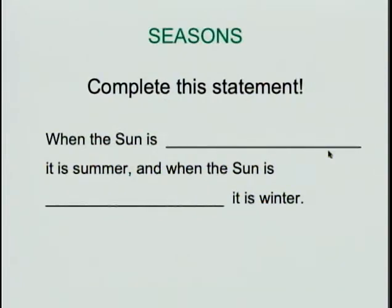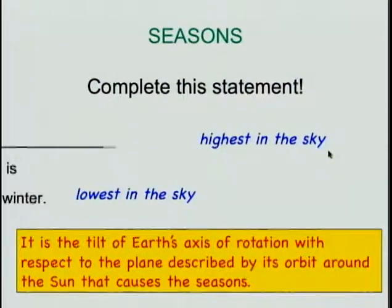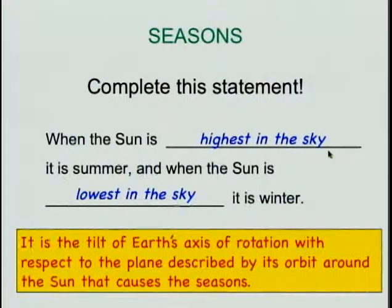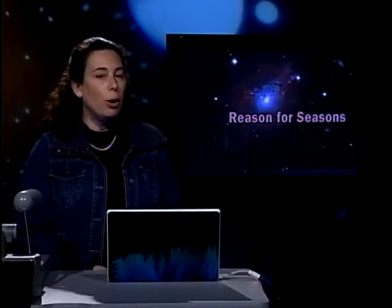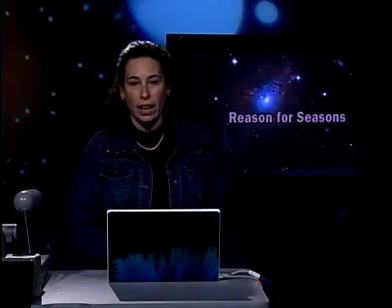Now let's complete this statement correctly: when the Sun is highest in the sky, it is summer; when the Sun is lowest in the sky, it is winter. It is the tilt of Earth's axis of rotation with respect to the plane described by its orbit around the Sun that causes the seasons. I hope it's clear and I hope it helps — I'll see you next time.